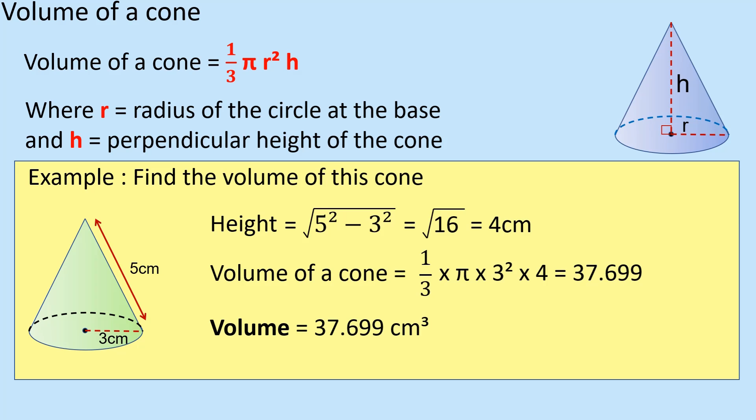Alright, so that's it in a nutshell. That's the volume of a cone: one-third π r² times the perpendicular height. Please visit mathsschool.co.uk to get some additional practice, but you're welcome to come and review this lesson at any time. Thanks for listening.